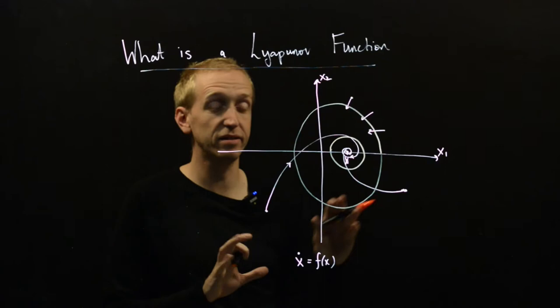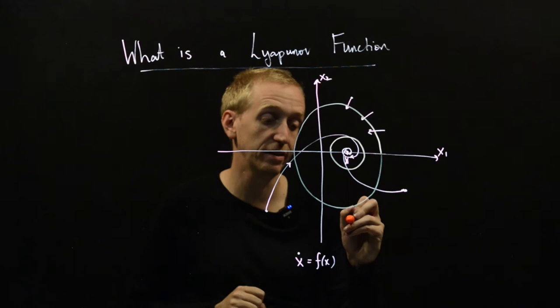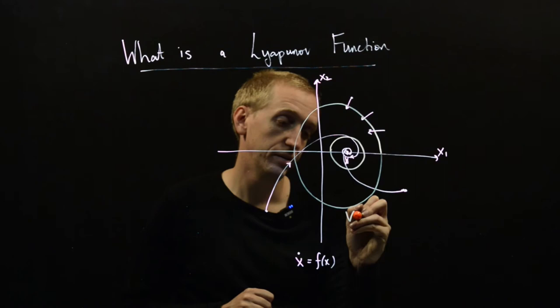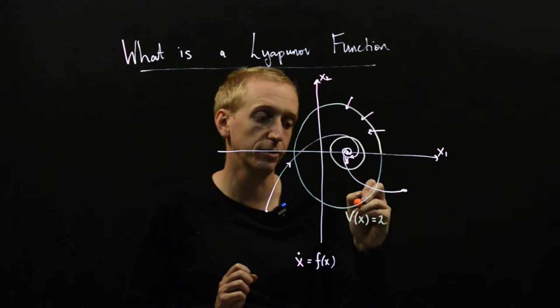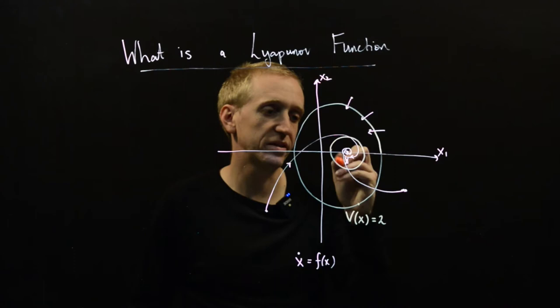And the idea is that on our state space, we have this additional function called a Lyapunov function, and you can start to imagine contours of constant value for that Lyapunov function. So I'm just going to say, we're going to call our Lyapunov function v, and this contour here, this is the values of v of x is equal to 2. So given any x in our state space that lies on this curve, the value of v of x is equal to 2.